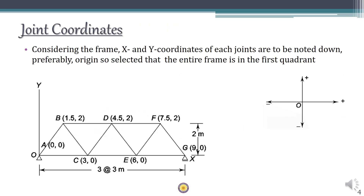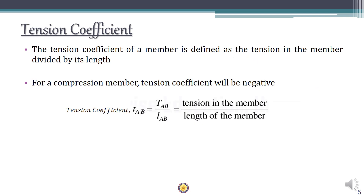Joint coordinates are nothing but the Cartesian x and y coordinates of each of the joints. When finding out the joint coordinates of each joint, always try to keep all the joints in the positive quadrant, which is the first quadrant. Here is a small example where we have found out the joint coordinates of each of the joints in the truss.